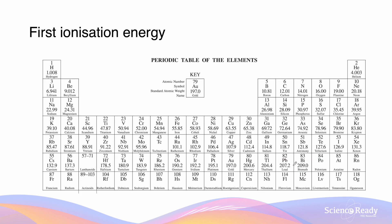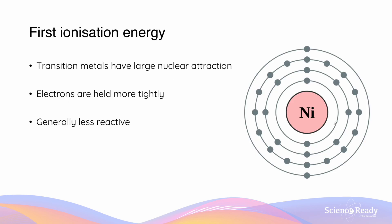Looking again at our periodic table, this time not colour-coded: the bottom left of the table has the most reactive metals, while the top right has the least reactive — and on the top right we actually have non-metal elements. Transition metals are generally going to be less reactive than group 1 and group 2 metals, because they have a greater nuclear attraction between the electrons and the nucleus.